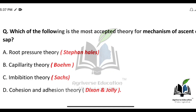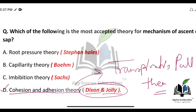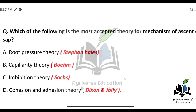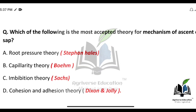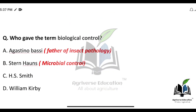Which is the most acceptable theory for the mechanism of ascent of sap? Options are Root Pressure Theory, Capillarity Theory, Imbibition Theory, and Cohesion and Adhesion Theory. The right answer is option D — Cohesion and Adhesion Theory, also called Transpiration Pull Theory, given by Dixon and Joly. Root Pressure Theory was given by Stephen Hales; Capillarity Theory by Bohme; Imbibition Theory by Sachs.